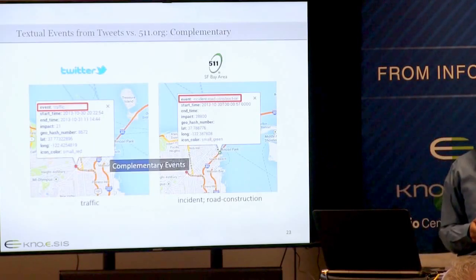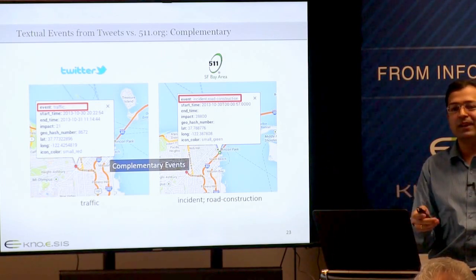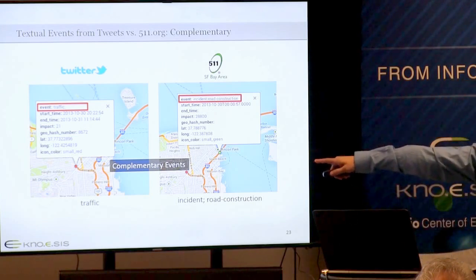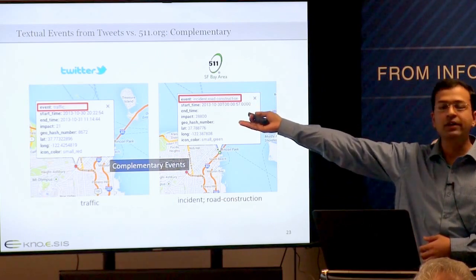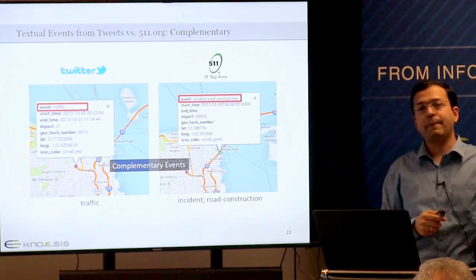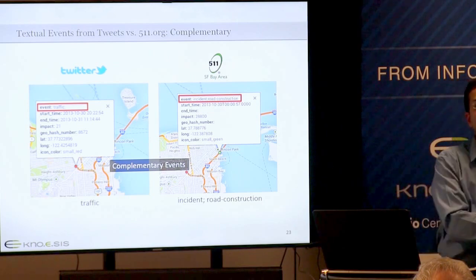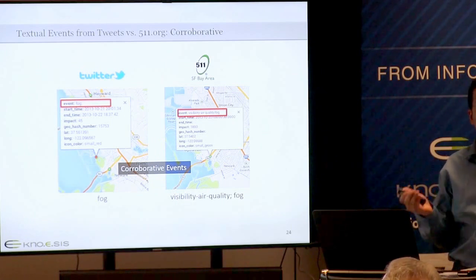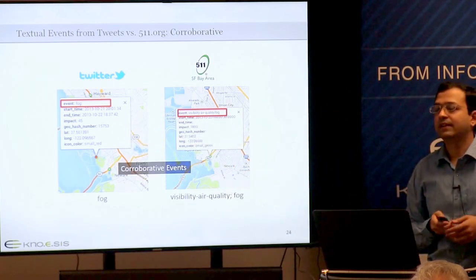Returning to the thesis statement's claims of complementary, corroborative, and timely information: here is an example of a complementary event. On the right side, the official source 511.org reported construction, and on the left is what we extracted from Twitter—traffic. Traffic is complementary to construction; an event is complementary when it gives additional information rather than repeating the same thing. Corroborative means saying the same thing: the official report noted fog, and we also extracted fog.